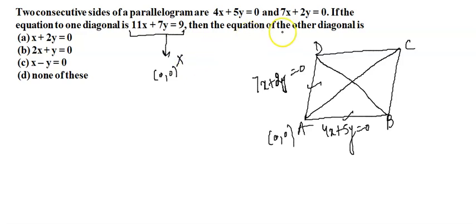So that means this diagonal will be BD. The equation of BD will be 11x plus 7y equals 9. Now if I solve this BD and AD, we will get coordinates of D as minus 2/3, 7/3 and coordinates of B as 5/3 and minus 4/3.